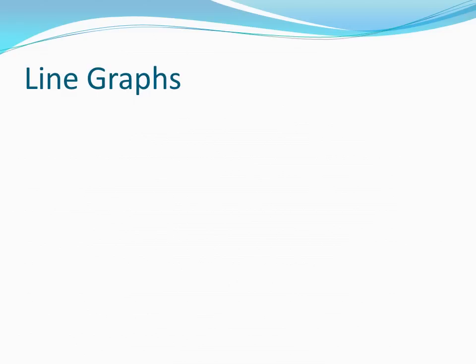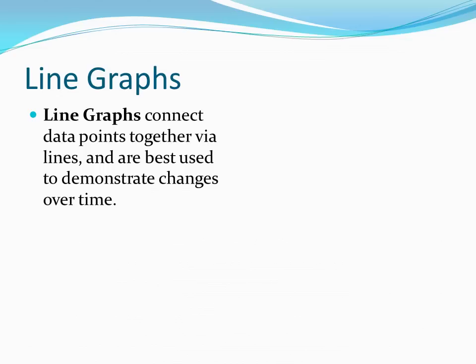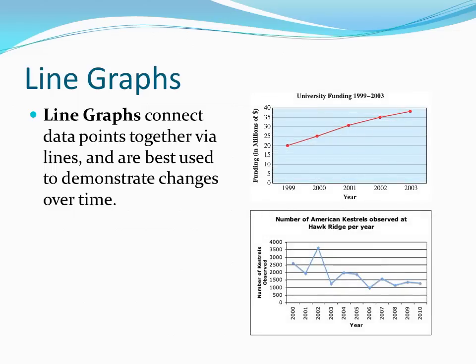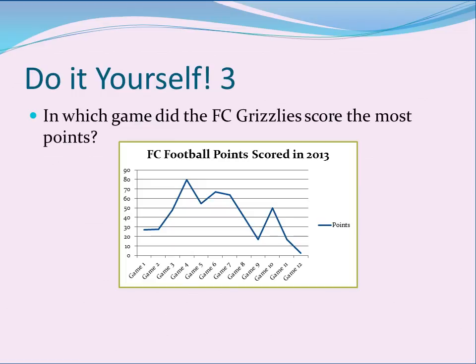The fifth type of graph we'll look at are called line graphs. Line graphs connect data points together with lines, and as such are best used to demonstrate changes, most often changes over time. You can see two examples of line graphs to the right. Looking at the line graph below, in which game during the 2013 season did the Grizzlies score the most points? Pause the video, and once you have an answer, press play to see if you are correct. If you said game four, you got this one right, and you're ready for our final type of graph.